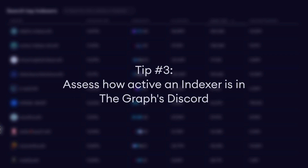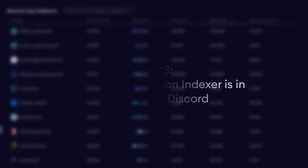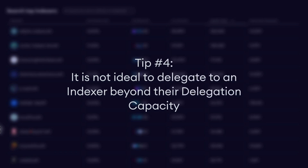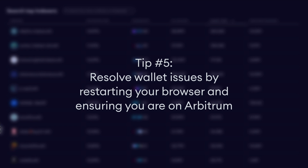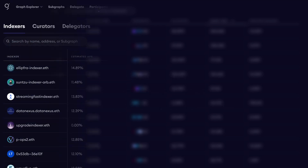While not a quantifiable metric, it's also recommended to take into consideration an indexer's activity in the graph community. Each indexer has a delegation ratio that determines the maximum amount of GRT they can handle, and delegating beyond this capacity can dilute rewards for everyone involved. You might also encounter technical issues in your crypto wallet with pending or queued transactions, which can often be resolved by restarting your browser. Also, ensure that you are on Arbitrum whenever you are delegating.